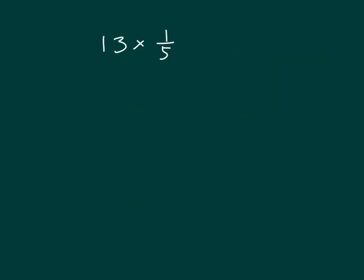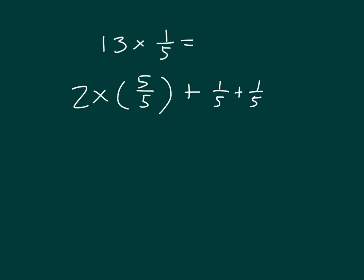How about 13 times 1/5? How many groups of 5 fifths fit into 13? Right — 2 of them, which is 10 fifths. And then you add 3 more fifths. So this is really 2 times a whole, which is 2, plus 1/5 + 1/5 + 1/5, which is 3 fifths. 2 plus 3 fifths equals 2 and 3 fifths.